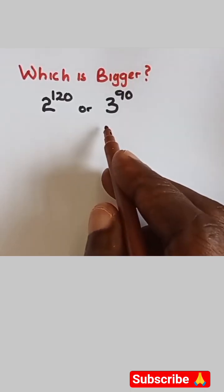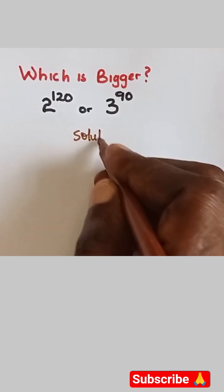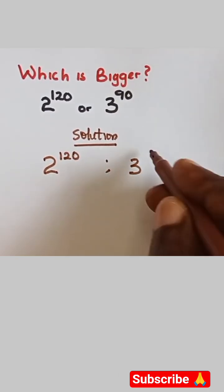We have 2 raised power 120 and we have 3 raised power 90. We want to check which one is bigger without using the calculator. So what we do, we have 2 raised power 120 and we have 3 raised power 90.